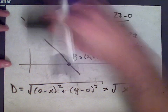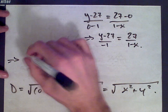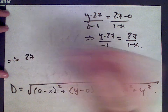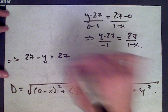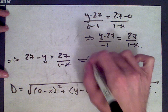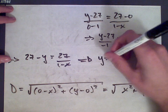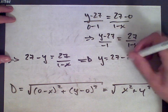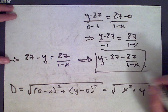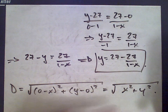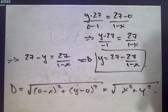Now let's solve for y. We get 27 minus y equals 27 divided by (1 minus x). Solving for y, this gives us y equals 27 minus 27 over (1 minus x). So here we get y in terms of x, which will allow us to write the distance function as a function of x alone by replacing y with this expression.